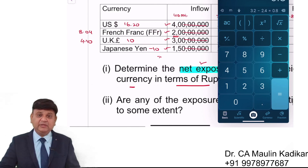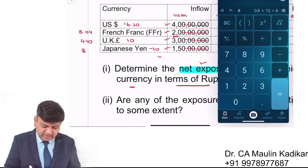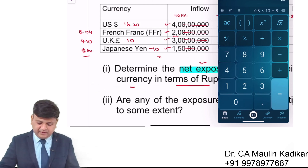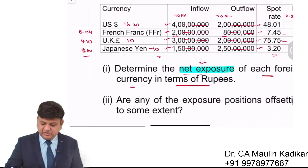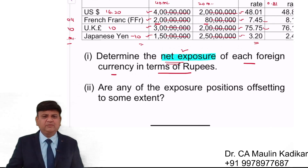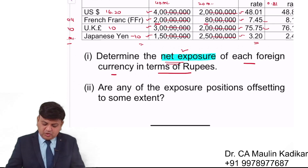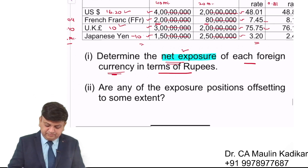The rupee is becoming stronger by 0.80, and there is a 10 million payment in Yen. So, net exposure means the net value in terms of the receipt and payment difference of each foreign currency, expressed in terms of rupees.